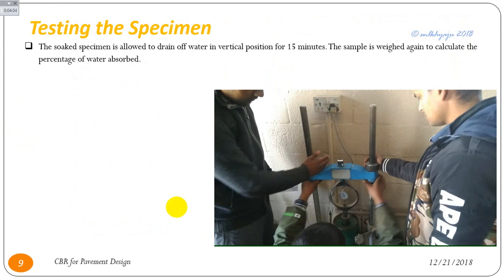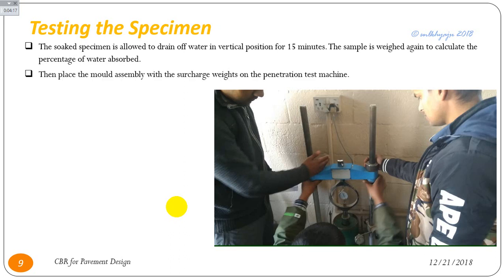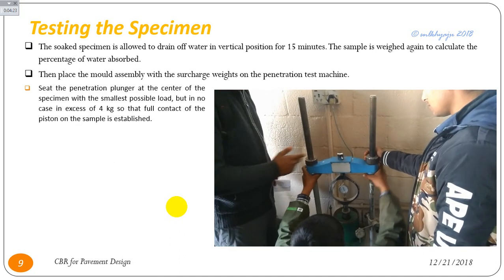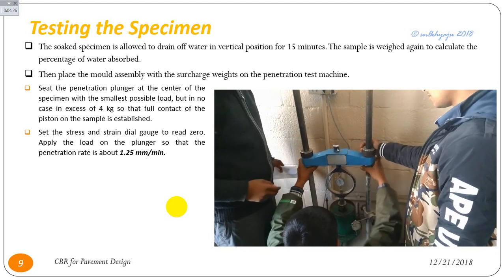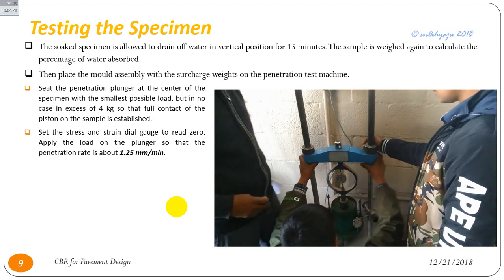After 4 days of soaking, the specimen is allowed to drain off water in an inverted position for 15 minutes. The sample is weighed again to calculate the percentage of water absorbed. Then place the mold assembled with the surcharge weight on the penetration test machine and set the stress-strain dial gauges to read zero.